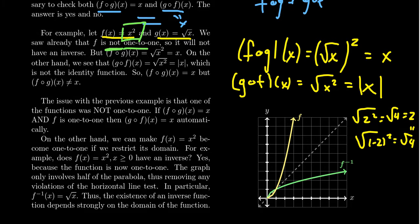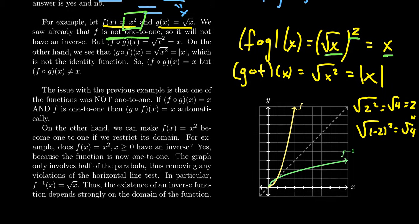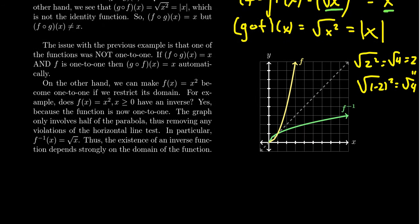But at the same time, we do still see this relationship that when you compose, if you do the square root and followed by the square, you get x. So it's like we're really close to having an inverse. Someone might call this like a pseudo-inverse. And it turns out x squared can have an inverse if we tweak it.